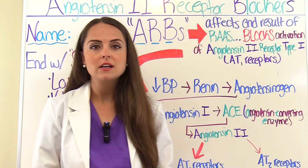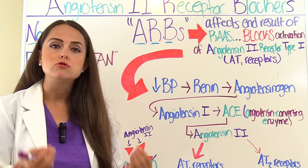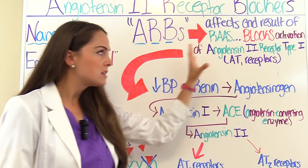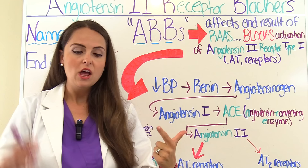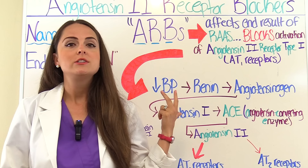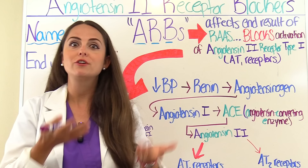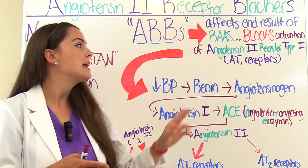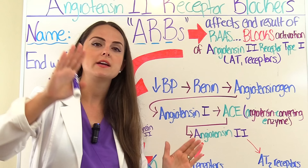We're specifically talking about receptor sites called angiotensin 2 receptor type 1. These type 1 receptors are found mainly in the smooth muscle of vessels and the adrenal glands. If we block these type 1 receptors from accepting angiotensin 2, instead of vasoconstricting, we're going to vasodilate, which decreases systemic vascular resistance and decreases blood pressure. Also, angiotensin 2 normally triggers the release of aldosterone, which causes the kidneys to conserve sodium and water but excrete potassium. Blocking this receptor means we'll decrease blood volume by excreting sodium and water and retaining some potassium.